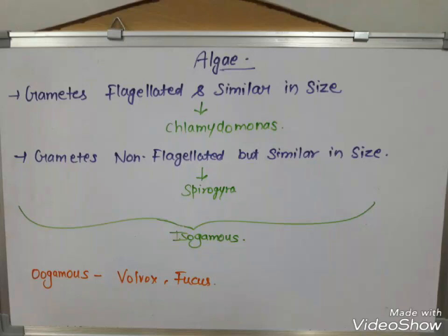Spirogyra gets a lot of questions in NEET, so you have to remember this. There are isogamous gametes — flagellated isogamous and non-flagellated isogamous. You can see F and C as a trick to remember flagellated isogamous. The example of non-flagellated isogamous is Spirogyra, because it gets asked in NEET. That's why I am focusing on it.